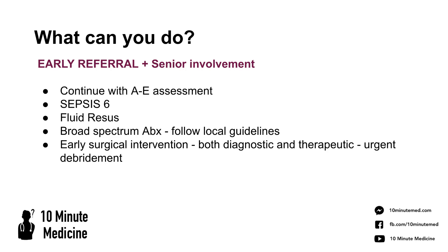From your perspective, continue your A-to-E assessments to make sure the patient remains stable — assessing airway, breathing, checking circulation with regular BP cycling, monitoring heart rate and fluid status, knowing that she's going into renal failure as a result of the infection. You want to make sure you're completing the Sepsis 6: give oxygen if needed — her oxygen is stable at the moment — and consider giving fluids given the renal function and high risk of septic shock. Start broad-spectrum antibiotics according to local guidelines.